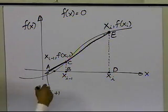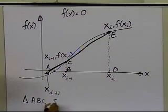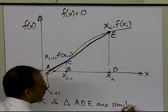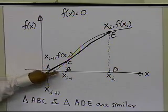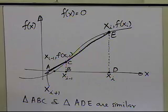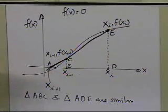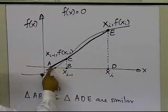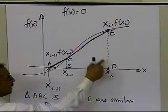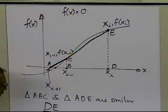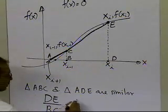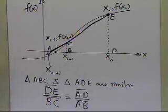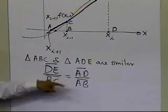Now you can see that triangle ABC and triangle ADE are similar, because all the angles are the same. So in similar triangles, this height DE divided by this height BC will be equal to this width AD divided by this width AB. The two heights are proportional to the two widths — that's what we get from similar triangles.